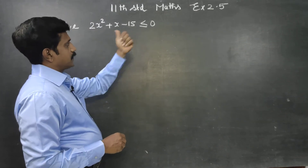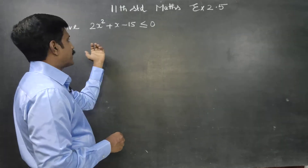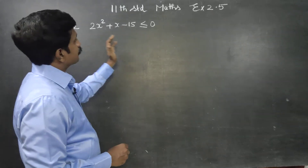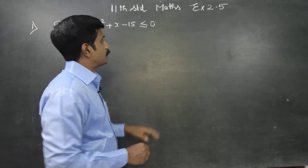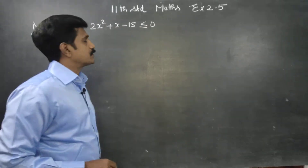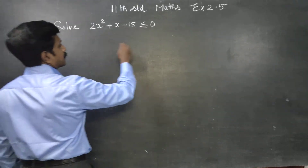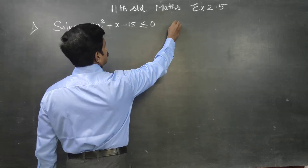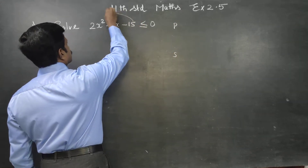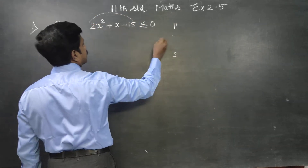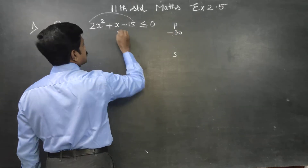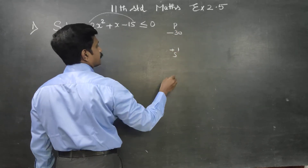It's an inequality. We are solving a quadratic inequality for the first time — the answer must be less than or equal to 0. First of all, using the product-sum method: my product is minus 30, my sum is plus 1.